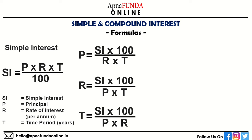I hope you are noting all these important formulas down in your copy. Amount is equal to principal plus simple interest. At the end of the period, the interest is added to the principal, so amount equals principal plus the interest earned or paid. You will be more clear about the applications of this formula when we start solving questions in our next video.